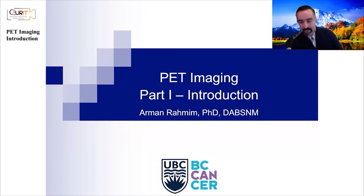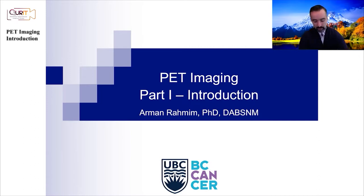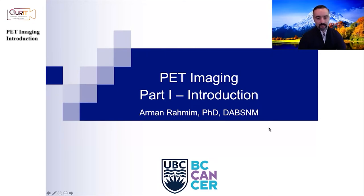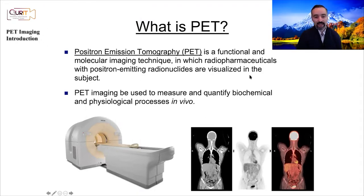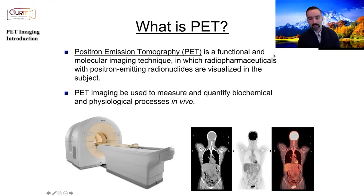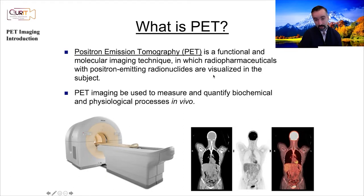We're going to give a number of talks here in multiple parts going through the wonderful technology, practice, and art of PET imaging. We'll begin with an introduction. PET, standing for positron emission tomography, is a functional and molecular imaging technique where radiopharmaceuticals with positron-emitting radionuclides are visualized in the subject being scanned. PET imaging can be used not just to visualize, but also to measure and quantify biochemical and physiological processes in vivo.